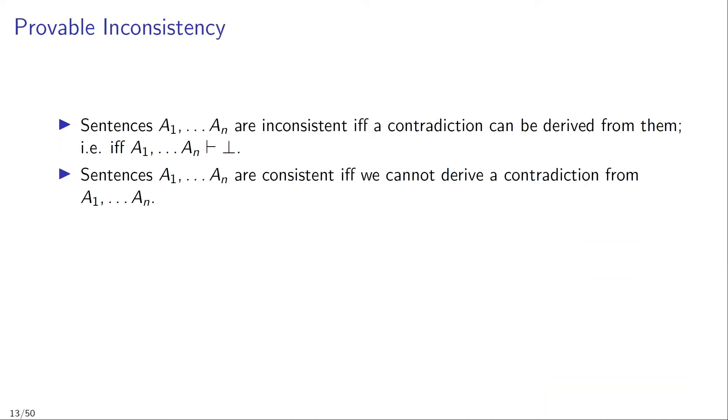Sentences A1 to AN are inconsistent if and only if a contradiction can be derived from them. That means that sentences A1 to AN are inconsistent if and only if A1 to AN turnstile bottom. Otherwise A1 to AN are consistent, meaning A1 to AN are consistent if and only if we cannot derive a contradiction from them.